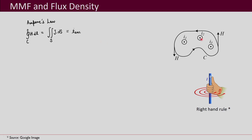If all currents I1, I2, I3 are equal and you have N number of turns passing through this path, then we can write it as H·L = N·I. This is further written as the MMF — magnetomotive force — with units of ampere-turns. We can also write the magnetic field intensity H as equal to F/L, or equivalently N·I/L, which has units of amperes per meter.